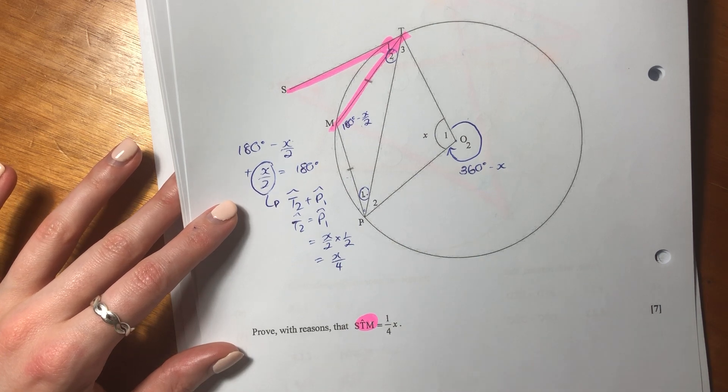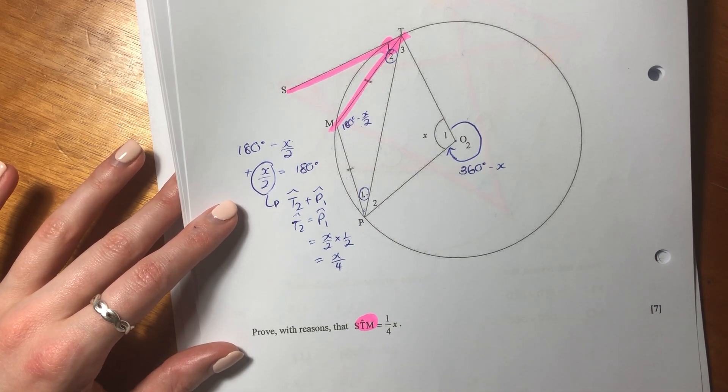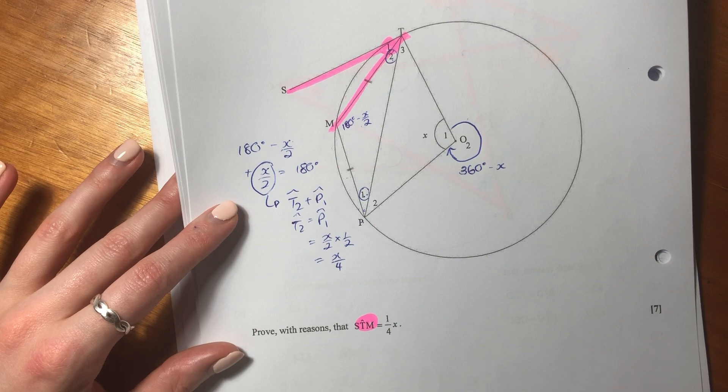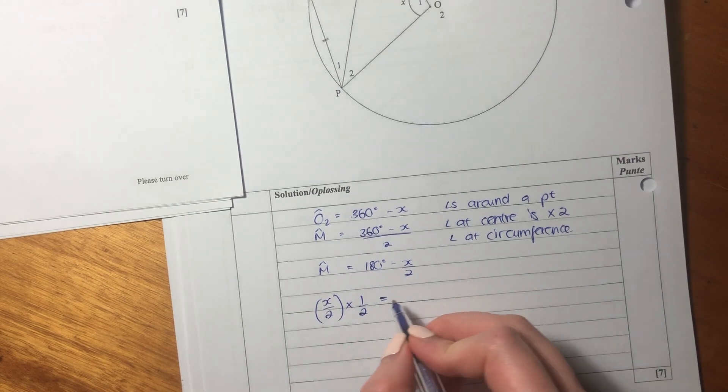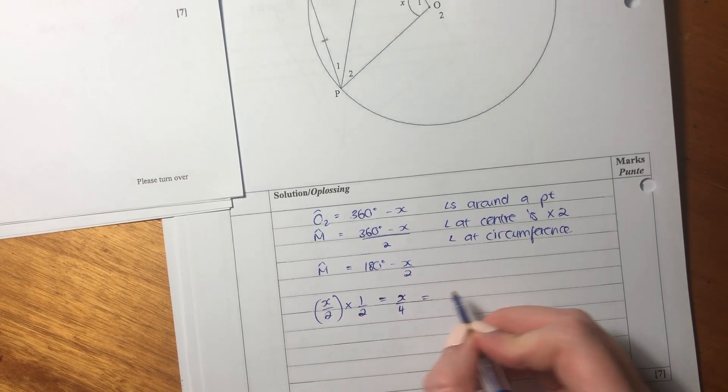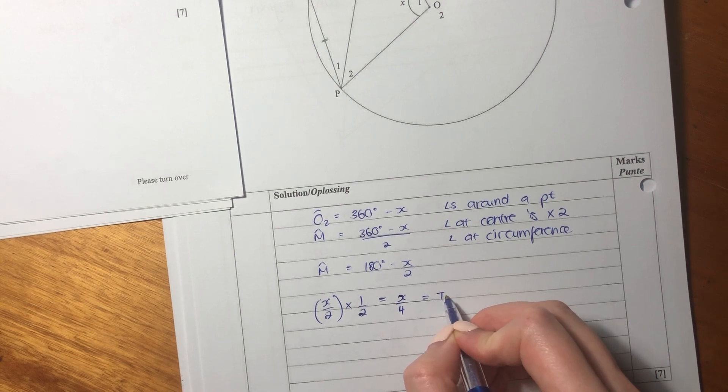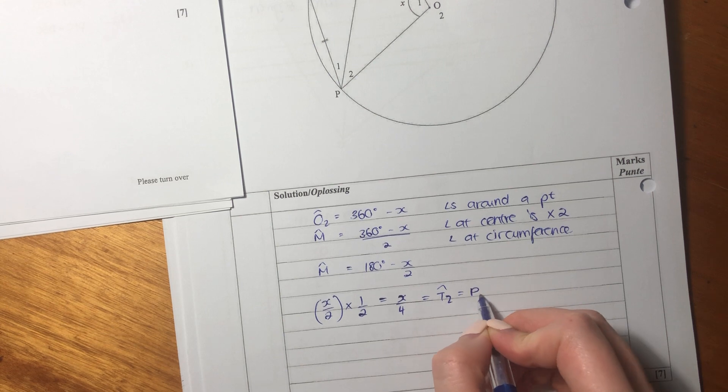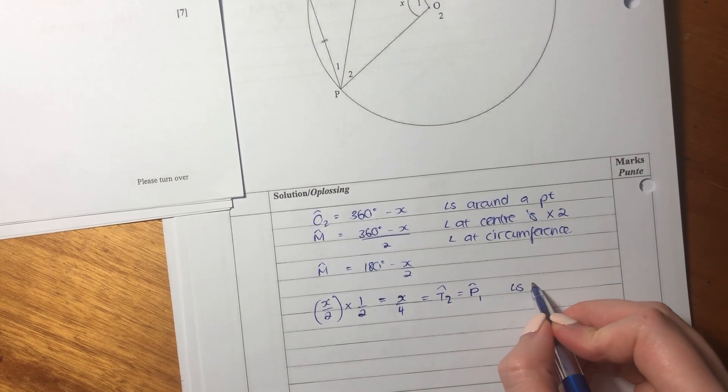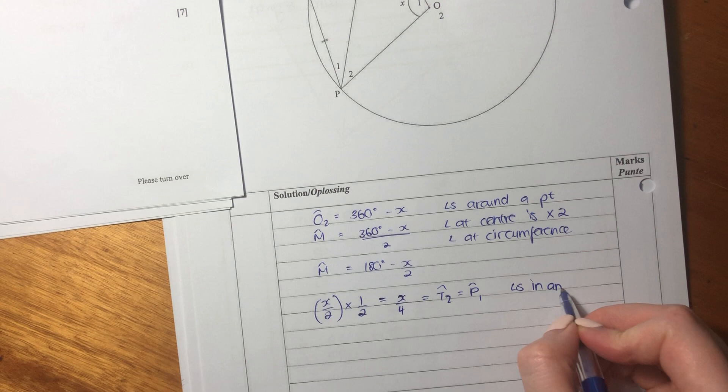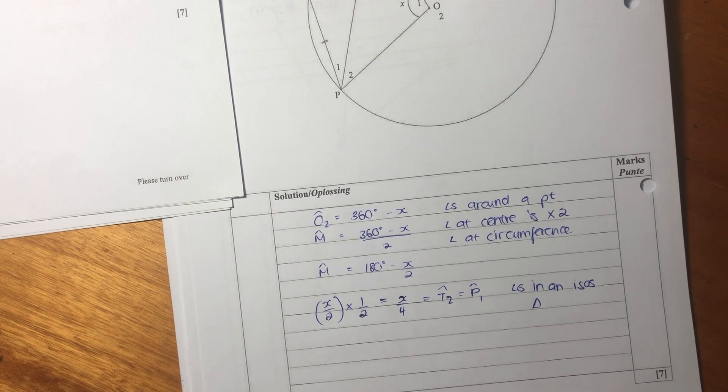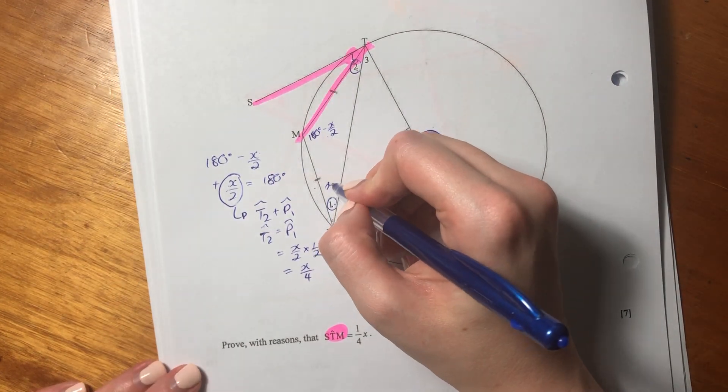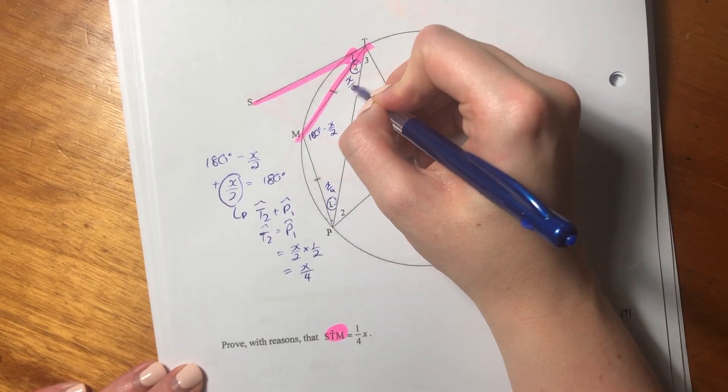Remember, angles in a triangle equal 180. So these things shouldn't come as a surprise. This is all stuff that we learned when we were like in grade 8. So we're going to say X over 2 times 2, which equals X over 4, equals T2, which equals P1. And I'm going to say angles in an isosceles triangle. So let's write in what we have. So this here is X over 4, this is X over 4.